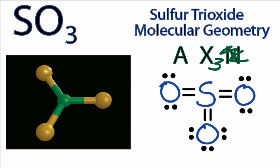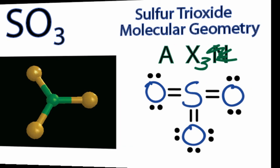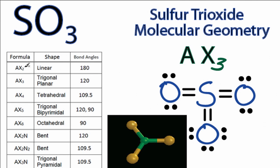So you could have memorized that AX3 is trigonal planar, or you could look it up if you had a table. And we can go to our table here and see that AX3 is trigonal planar, and the bond angles are 120. That's the angle right here, and then on each side.